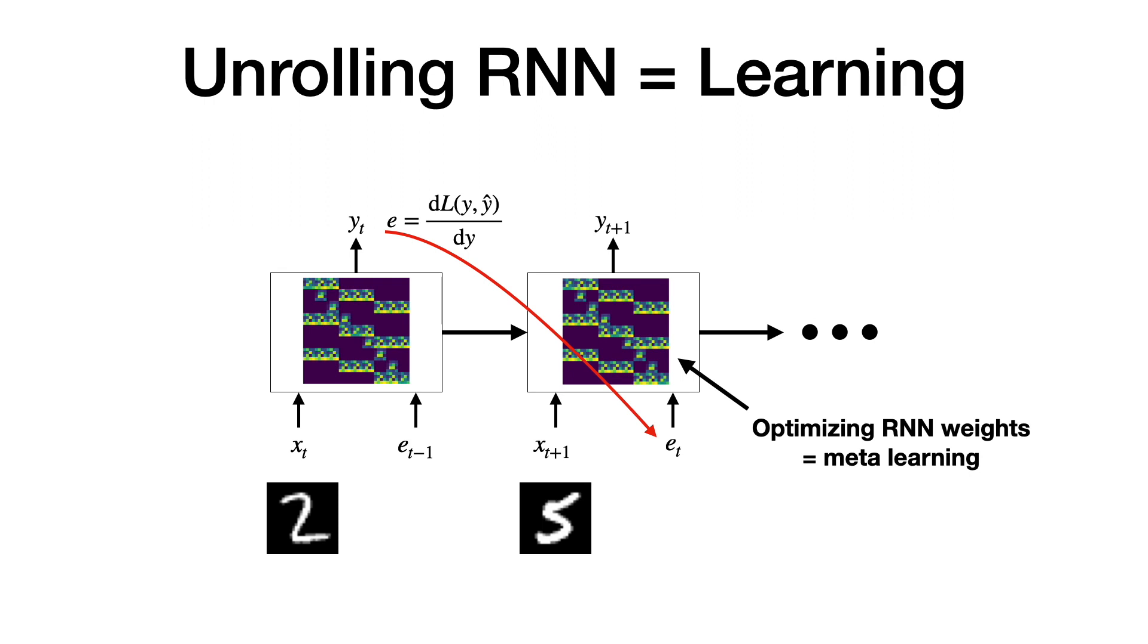Finally, meta-learning corresponds to optimizing these RNN weights. We do this with evolution strategies in the paper.